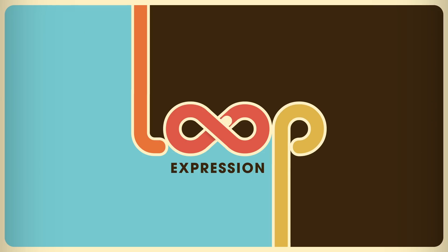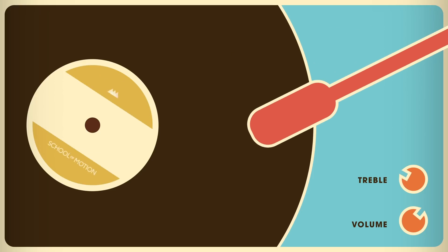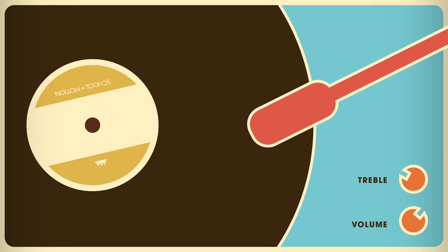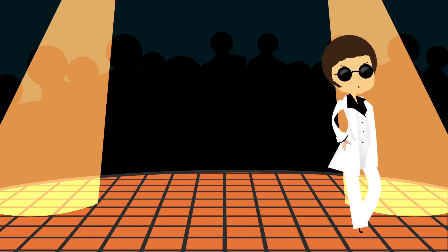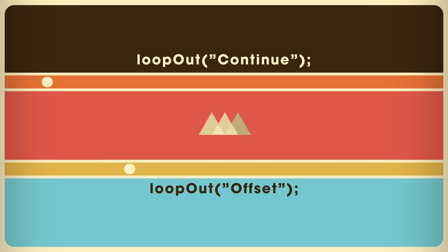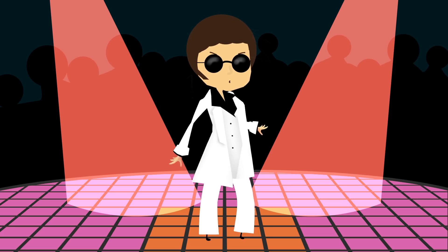Hey, what's up? This is Caleb with School of Motion, and in this After Effects tutorial, I'm going to show you how to use the loop expression. If you're new to After Effects, the loop expression may sound a little bit scary, but it's really a very easy way to loop keyframe values over and over again in After Effects without having to copy and paste keyframes. It can save you a lot of time. So if you're ready to learn something new, let's hop in.